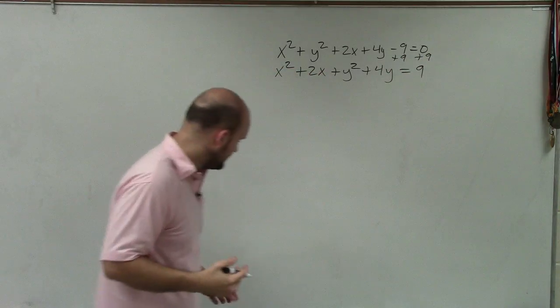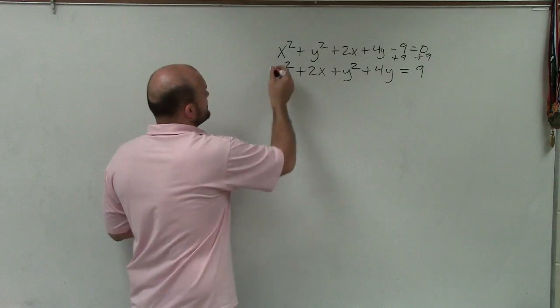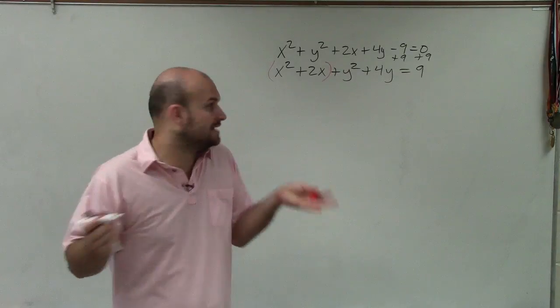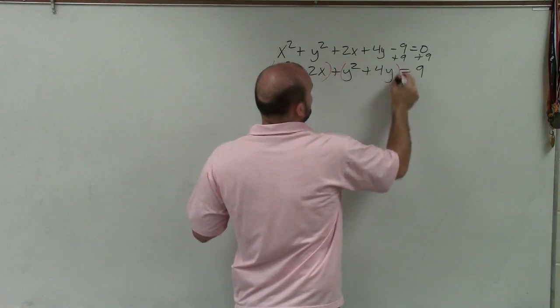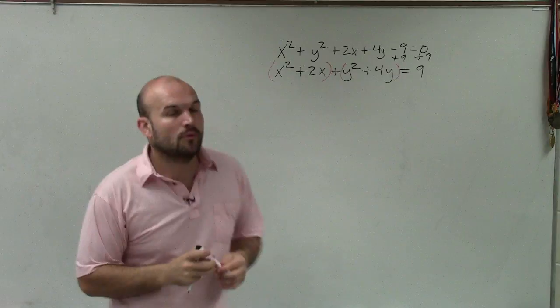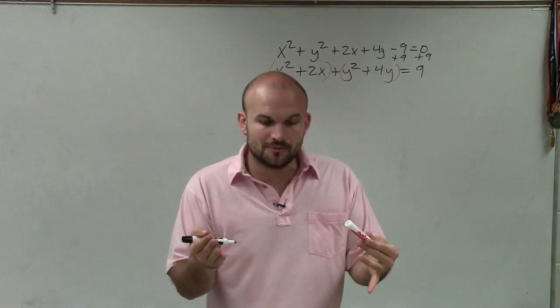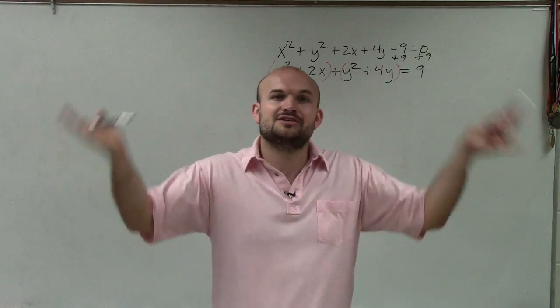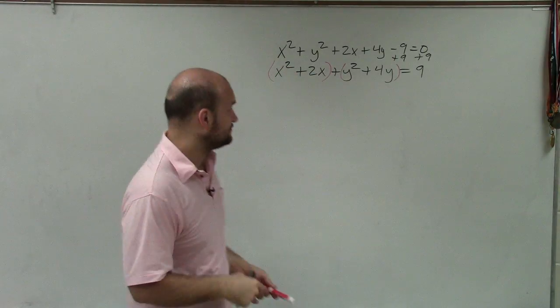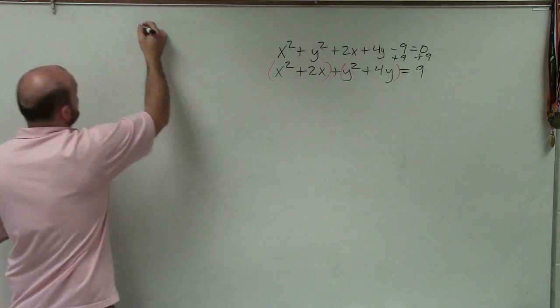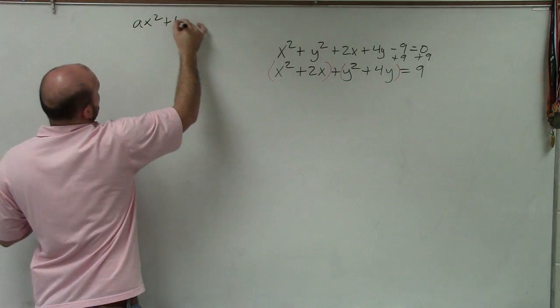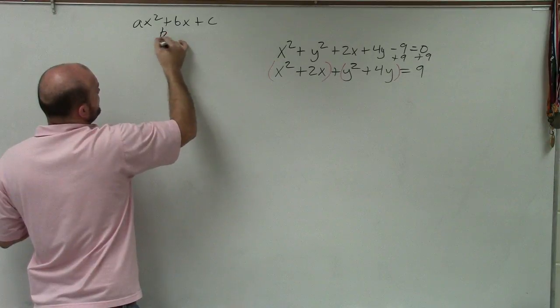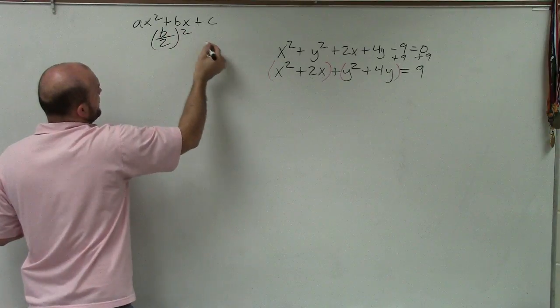So now, when completing the square, what we want to do - remember our general form is we want to have an (x - h)² - we want to have a binomial squared. So I'm going to look at both of these terms and say, alright, what do I need to do to be able to create a perfect square trinomial that I can factor to a binomial squared? So to do that, we have our completing the square. Now remember, when we have ax² + bx + c, to create a perfect square trinomial, we simply take b, divide it by 2, and square it.